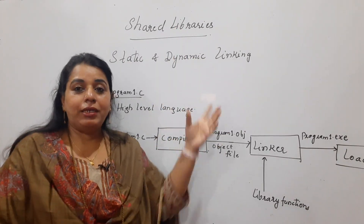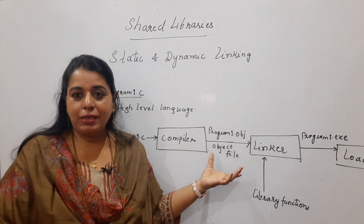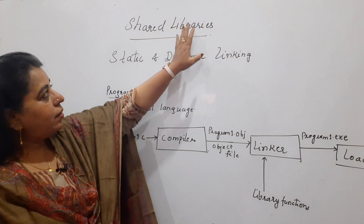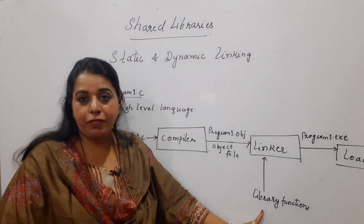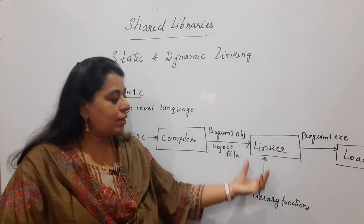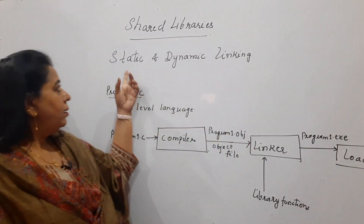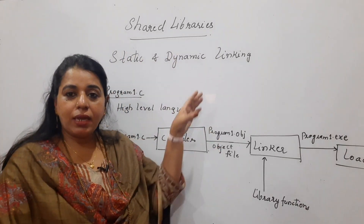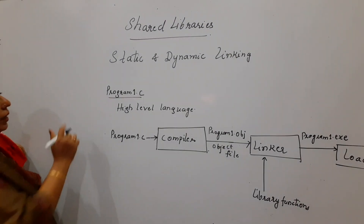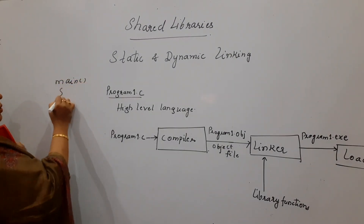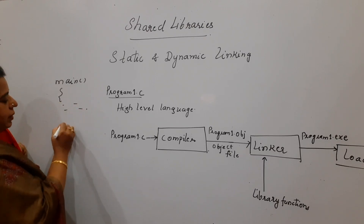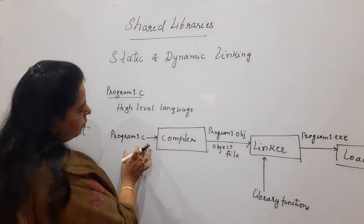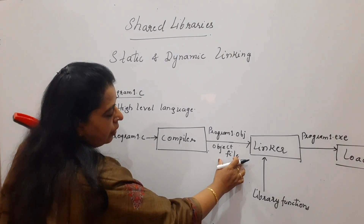The topic is shared libraries — how does it relate to this flow? Up to the compiler stage, no problem. But once we reach libraries, the library functions are linked to the program in two ways: either statically or dynamically. For example, consider a main program that has a printf statement somewhere — this is a library function being used.